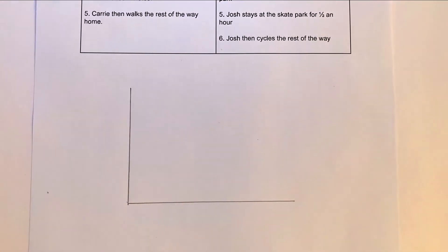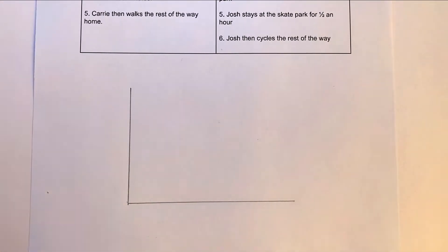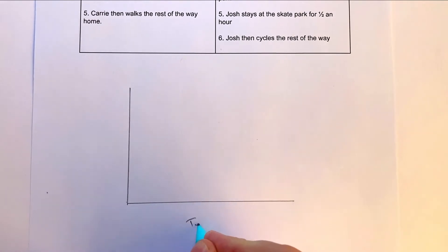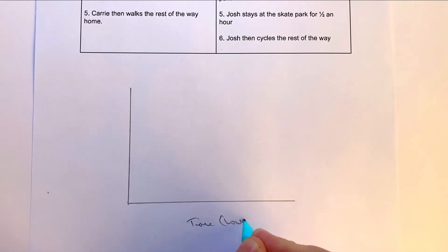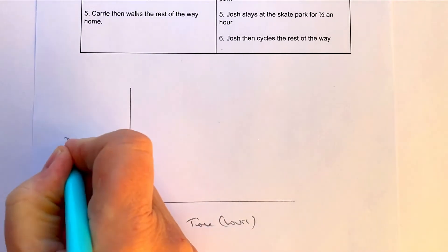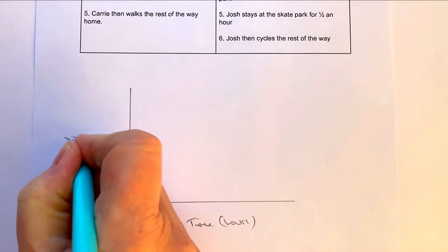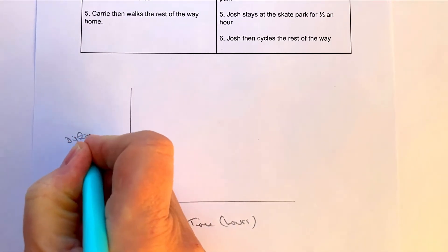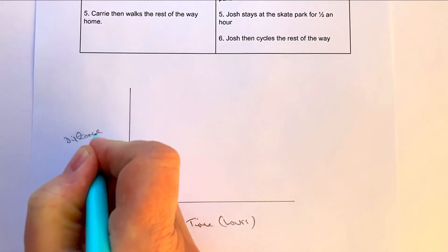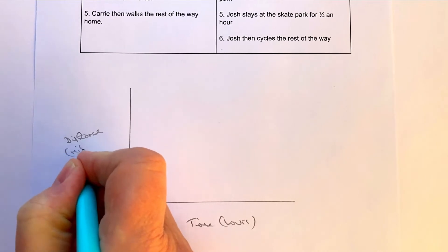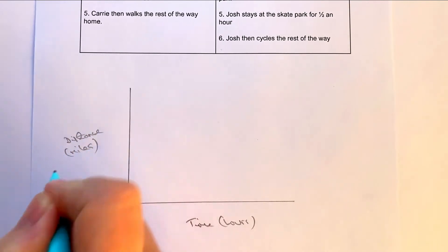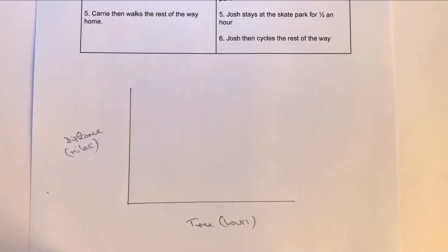I'm going to use a ruler. With distance-time graphs, you need to make sure that the bottom line is your time, and then the vertical line is going to be the distance travelled. It's important to always label things. I'm going to label it straight away: distance in miles and then time in hours.